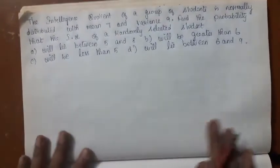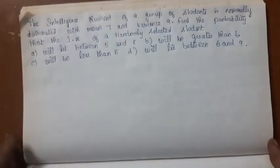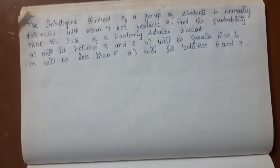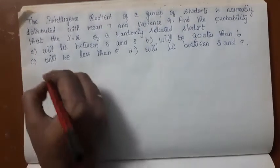Let us consider this problem. The intelligence quotient, the IQ of a group of students, is normally distributed with mean 7 and variance 9.